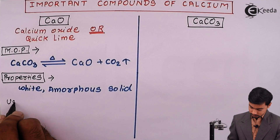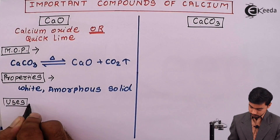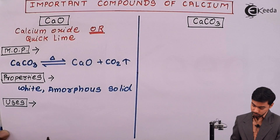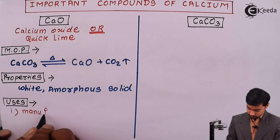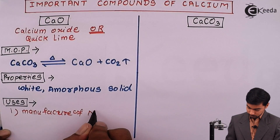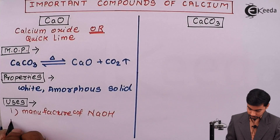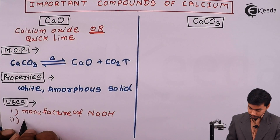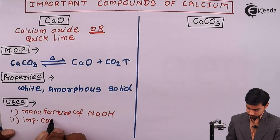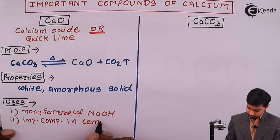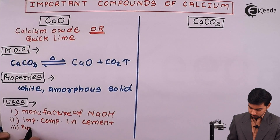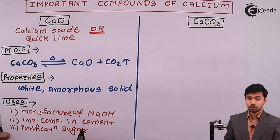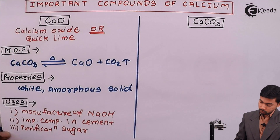Now let us move towards the uses of quicklime. Quicklime can be used in the manufacturing of cement. It can also be used in the purification of steel. Calcium oxide is very much important for mankind.